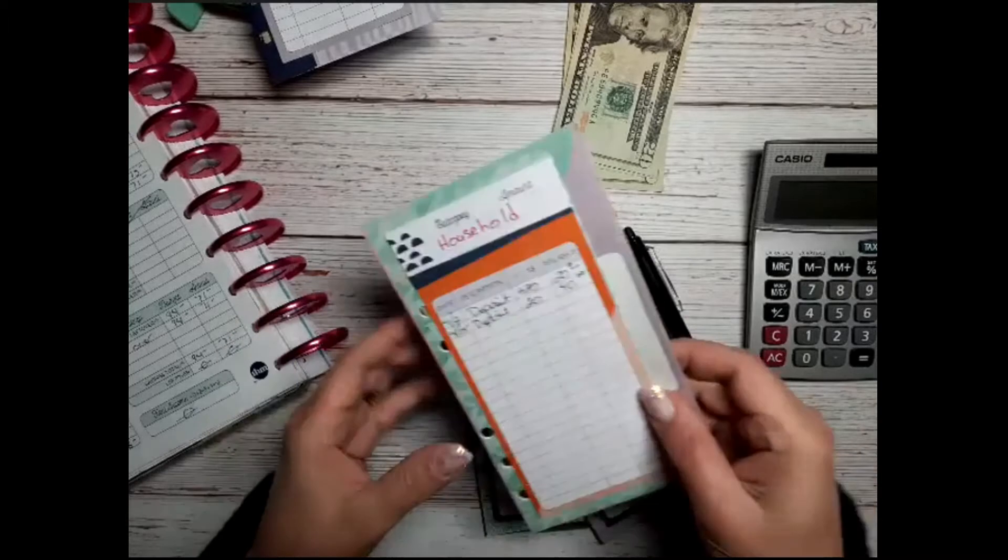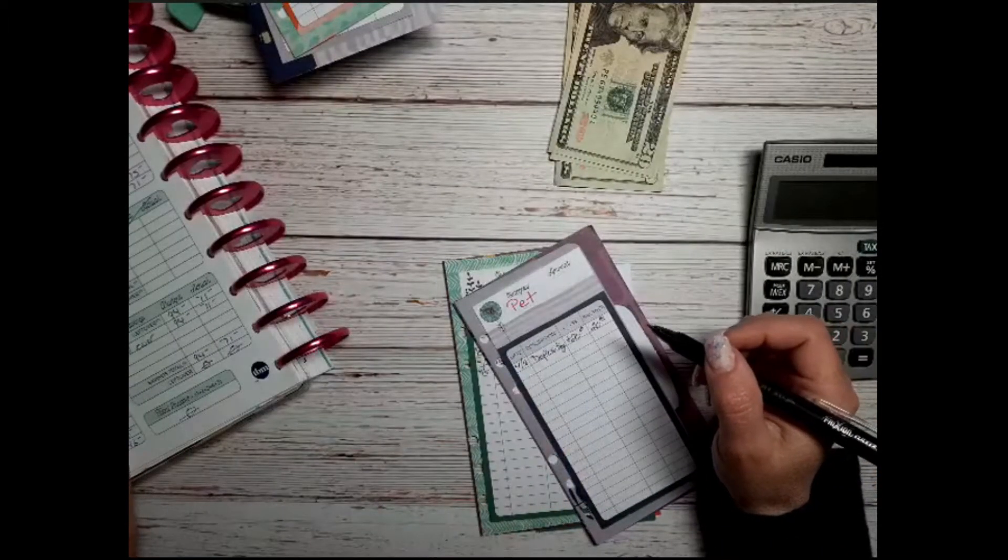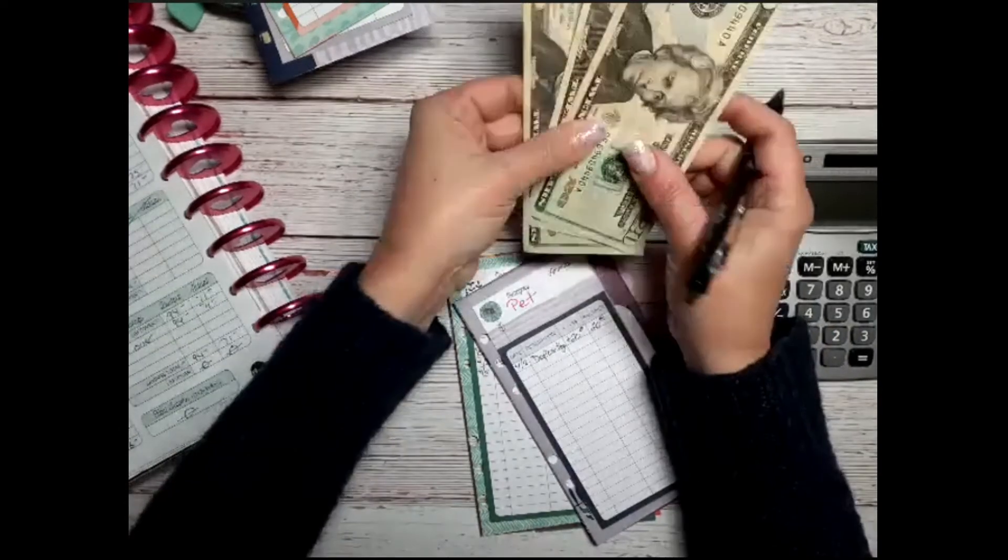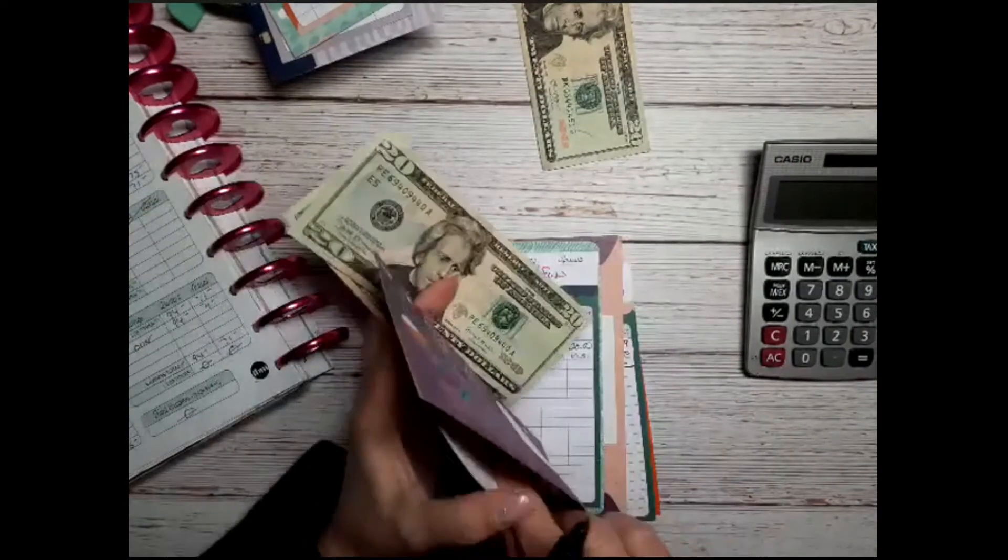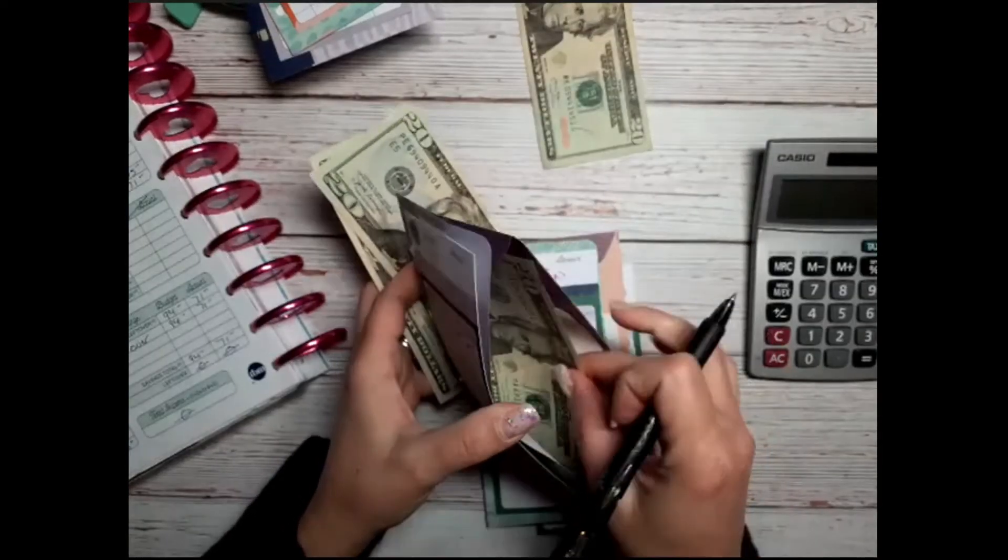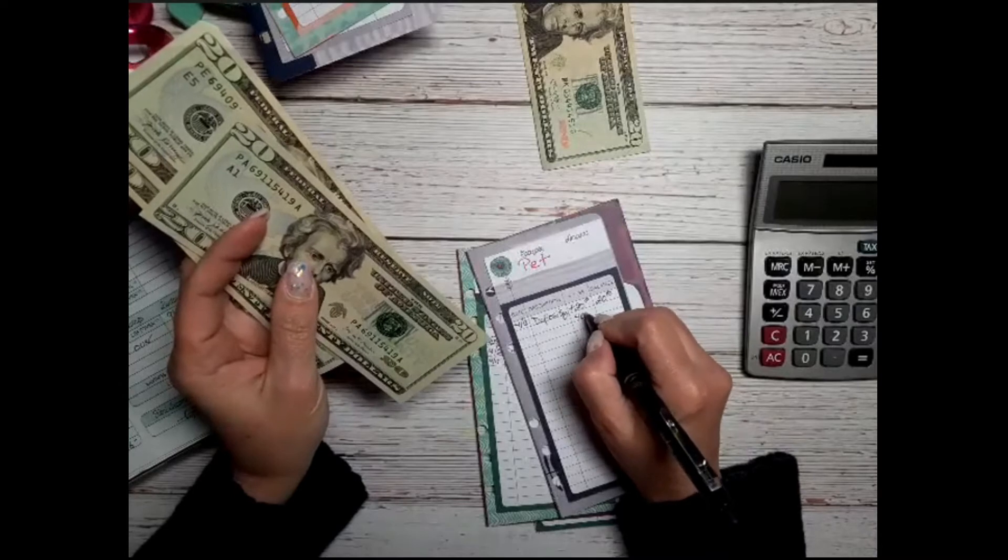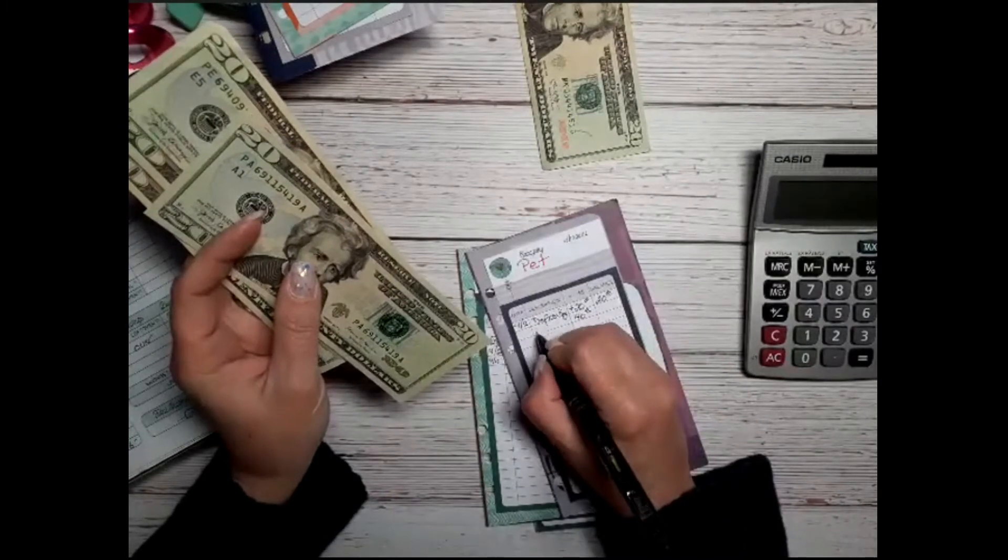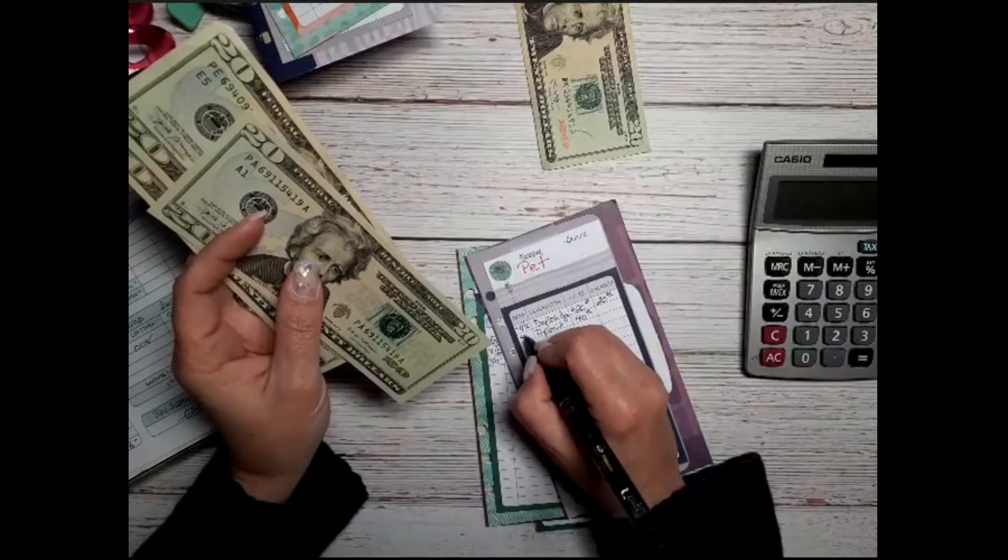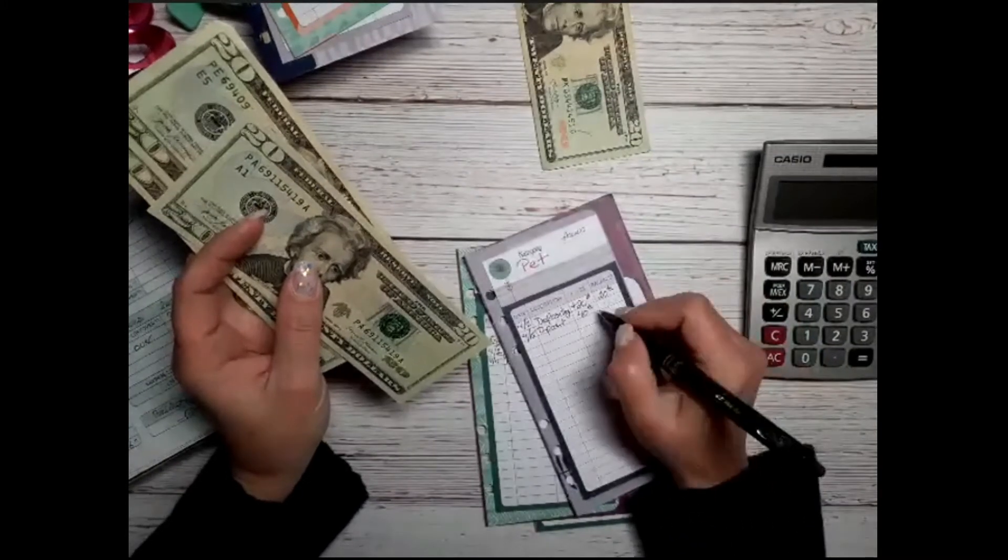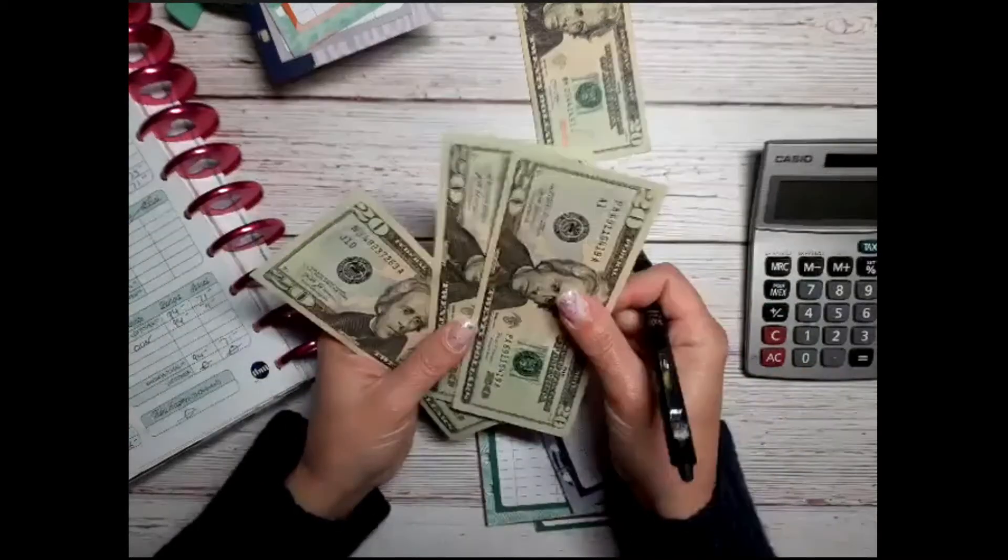Pets gets $40 and there's $20 in there already, so we're going to add $40, which is going to give us $60. So $20, $40, $60. This pet envelope has never been this high.